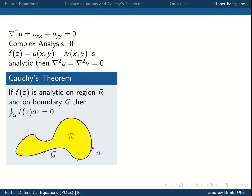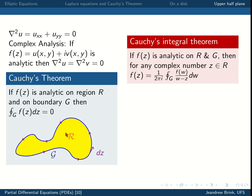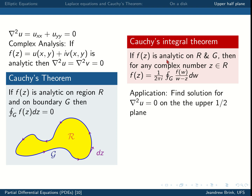We have two theorems associated with analytic functions on a region r: the integral of the function around the boundary equals zero, and Cauchy's integral theorem, which states that for z in the interior, f of z equals 1 over 2πi times the integral around the boundary of f(w) divided by w minus z. In the previous part we solved Laplace's equation on a disk using these two properties.